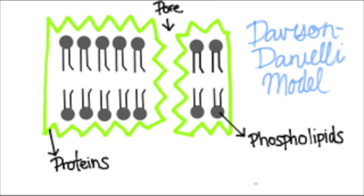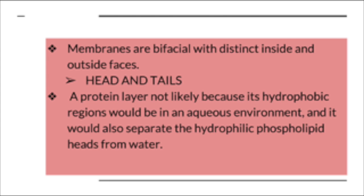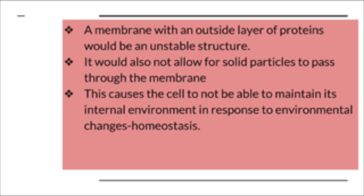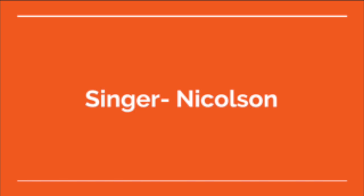A membrane with an outside layer of proteins would be an unstable structure, seeing as proteins need to be studded throughout the cell membrane. It would also not allow for solid particles to pass through the membrane, as the proteins would block such functions. All of this causes the cell to be unable to maintain its internal environment in response to environmental changes, meaning homeostasis would not be able to occur.